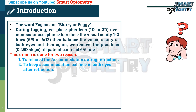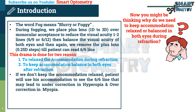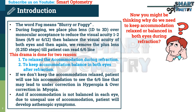Why do we need to keep accommodation relaxed and balanced in both eyes during refraction? If we don't keep accommodation relaxed, the patient will use accommodation to read the 6/6 line, which may lead to undercorrection in hyperopia and overcorrection in myopia. And if accommodation is not balanced in each eye, due to unequal use of accommodation, the patient will develop asthenopic symptoms.